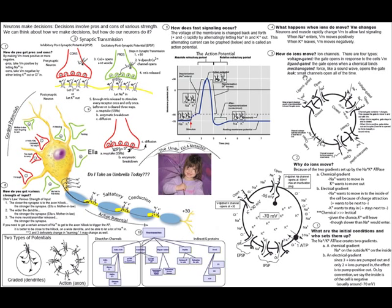The main goal here, or what we're mainly trying to understand, is how nervous tissue makes decisions, or how neurons make decisions, with some pretty basic thoughts. It's really easy to understand how you make decisions, how your decisions involve pros and cons, and those pros and cons can be of varying strength.